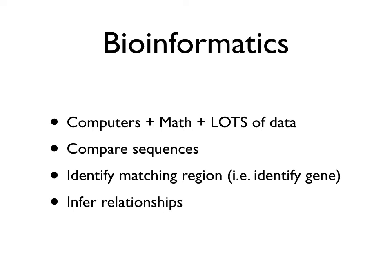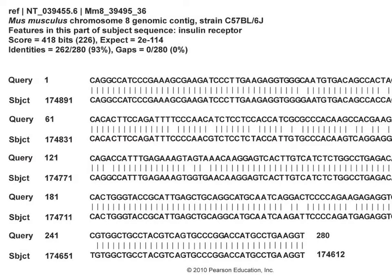As our capabilities have grown in generating DNA sequence data, so too has the demand for bioinformaticians and the need for software and analytical techniques that allow us to analyze large data sets in short periods of time. We can use bioinformatic methods to compare sequences among different species, compare gene regions and mutations among individuals, and look for relationships among species — one of the things you'll be doing in lab this week.